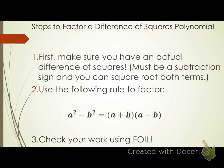Step one: we first want to make sure that you have an actual difference of squares. There must be a subtraction sign between your two terms, and you can take the square root of both terms. If there's not a subtraction sign in the middle, it's not a difference of squares, or if I cannot take the square root of one or both of my terms, then it's also not a difference of squares.